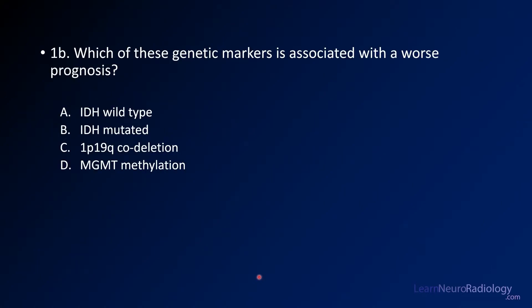Question number two is: which of these genetic markers is associated with the worst prognosis? You have to know what kind of tumor this is and then figure out which marker is most likely to indicate a bad prognosis. Is it related to the IDH type — whether it's wild type or mutated — 1p19q codeletion, or MGMT methylation?